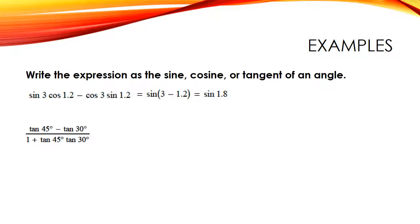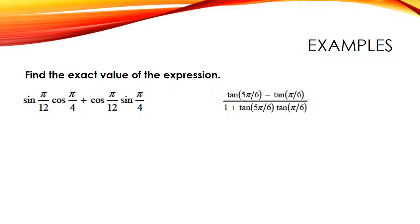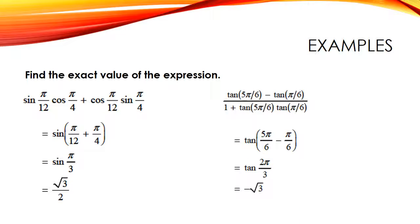Now try this one for tangent. Pause the recording, give it a try, and resume to check your answer. This is the tangent of the difference of two angles, so 45° minus 30° is 15°. The answer is the tangent of 15°. Now you're going to find the exact value of the expression — we're working our way backwards, but this time instead of leaving it as sine or cosine of the angle, you give the actual value. For the one on the left, this is the sine of the sum of two angles: π/12 plus π/4 gives us π/3, and the sine of π/3 is square root of 3 over 2. For the one on the right, this is the tangent of the difference: 5π/6 minus π/6 is 4π/6, which is 2π/3. The tangent of 2π/3 is negative square root of 3.